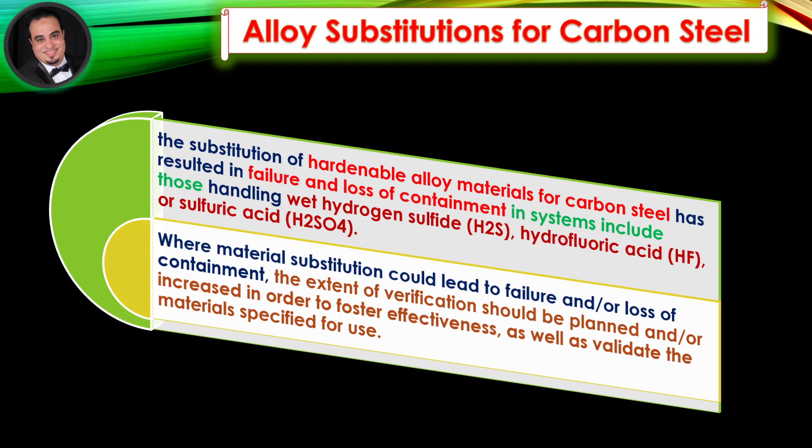Alloy Substitutions for Carbon Steel: Usually substituting an alloy in carbon steel equipment does not cause a problem. But the substitution of hardenable alloy materials for carbon steel has resulted in failure and loss of containment in systems handling wet hydrogen sulfide, hydrofluoric acid, or sulfuric acid, where material substitution could lead to failure and/or loss of containment. The extent of verification should be planned and/or increased to foster effectiveness and validate the materials specified for use.